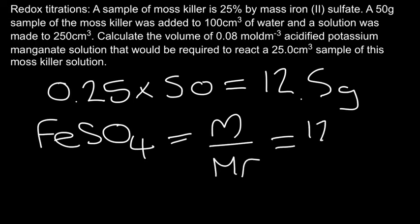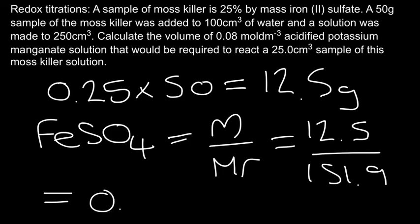So what I need to do is for moles of FeSO₄, this is going to be mass divided by MR. So the mass value is the 12.5, and I'm going to divide that by the MR of iron(II) sulfate, which is 151.9. And that's going to give me a mole value of 0.0823 mole.